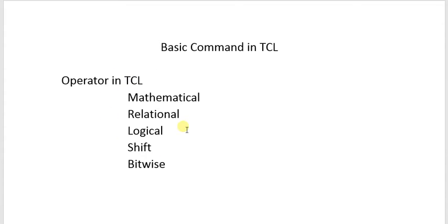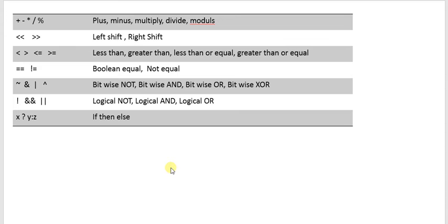The different operators supported in TCL are: the mathematical operators, relational operators, logical operators, shifting and bitwise operators. Some symbols used for mathematical operators are: plus, minus, star for multiplication, slash for division, percentage operator for modulus, and double star for representing a power.